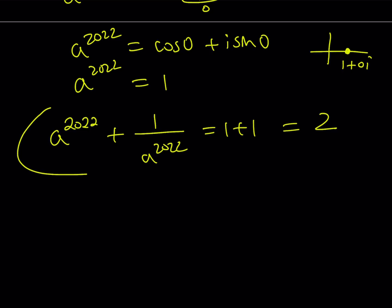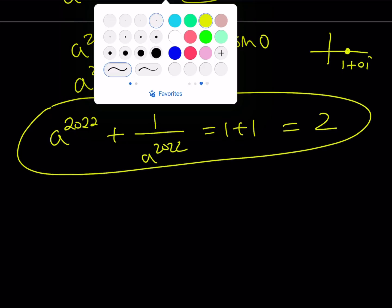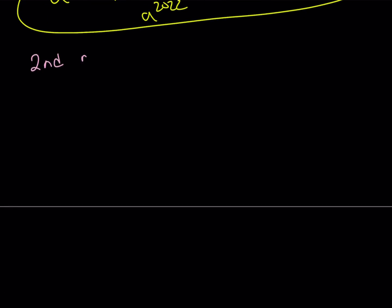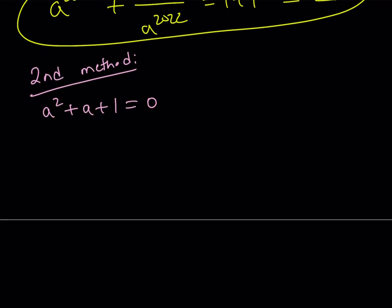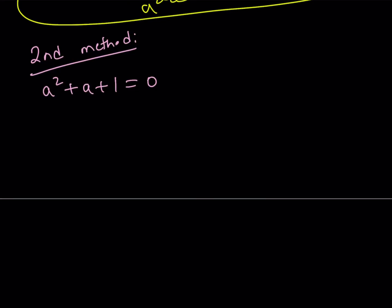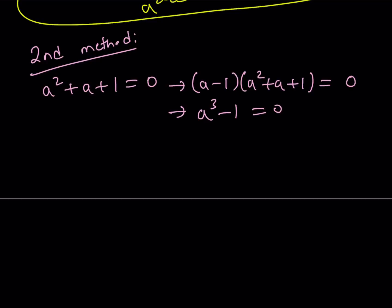Let's take a look at the second method. The second method is definitely very different — we're going to use pure algebra and a little bit of factoring. We have the same given expression a squared plus a plus 1 equals 0, and we're supposed to evaluate a to the power of 2022 plus 1 over a to the power of 2022. This expression should remind you of part of the difference of two cubes. If you multiply both sides of this equation by a minus 1, on the left-hand side you get a cubed minus 1 equals 0, which means a cubed equals 1.